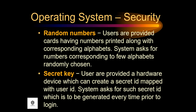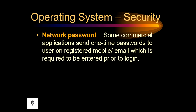One method uses random numbers: users are provided cards having numbers printed along with corresponding alphabets, and the system asks for numbers corresponding to a few randomly chosen alphabets. Another is a secret key, wherein users are provided a hardware device which can create a secret ID mapped with the user ID, and the system asks for such a secret ID to be generated every time prior to login. Another is the network password, wherein some commercial applications send one-time passwords to the user's registered mobile or email, which is required to be entered prior to login.